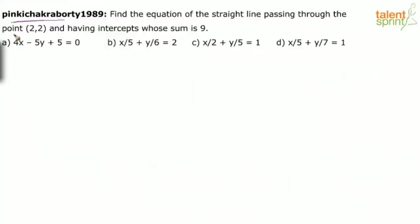Find the equation of the straight line passing through the point 2 comma 2 and having intercepts whose sum is 9. If you have gone through those videos, you would know that solving such questions is no deal at all. You can simply substitute the values in the options and verify. The line should pass through the point 2 comma 2. The x coordinate is 2, y coordinate is also 2. So substitute 2 and 2 in the options, whichever option satisfies, that's the answer.